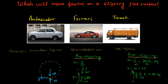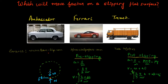Each of these three vehicles will be in contact with the road via its tires. So let's draw the free body diagram of one tire, assuming it is representative of all four tires. There will be the weight of the vehicle, a normal reaction from the ground, and a torque from the engine.